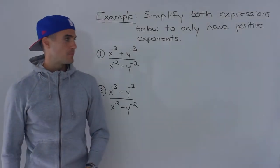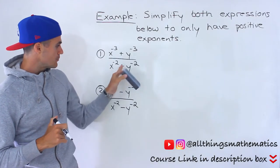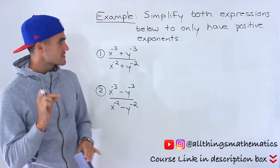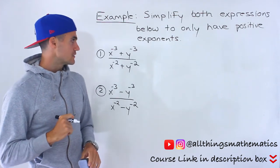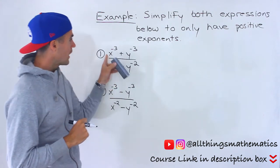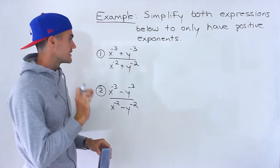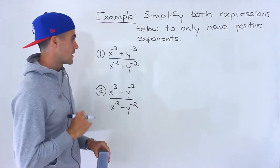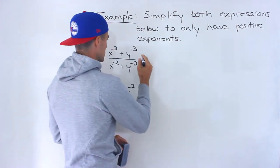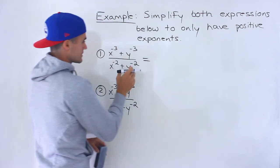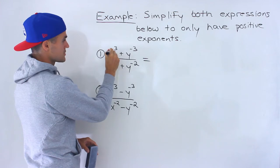What's up everyone, Patrick here. Welcome back. In this next video we have to take both of these expressions and simplify both of them to only have positive exponents. Starting with number one, we have x to the negative three plus y to the negative three, all over x to the negative two plus y to the negative two. The first thing I'm going to do is rewrite it with positive exponents.